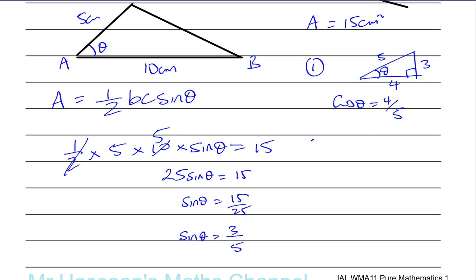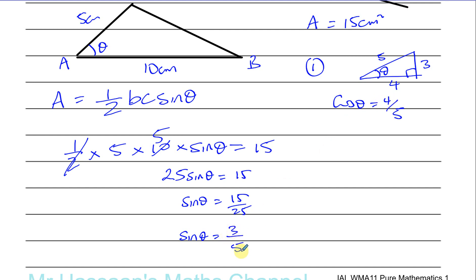Alternatively you can use the identity sin²θ + cos²θ = 1, although that is more of a P2 concept. Either way, we conclude that when sin θ = 3/5, the cosine of that same angle is 4/5.